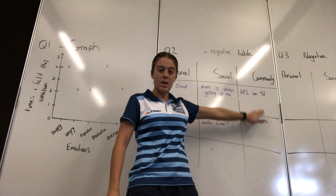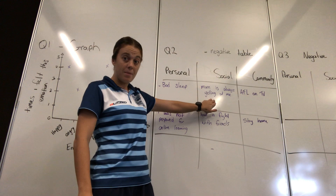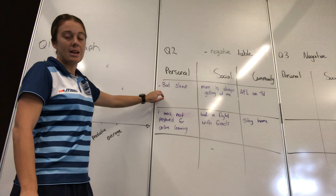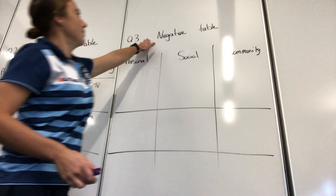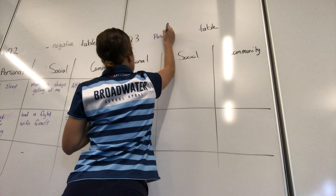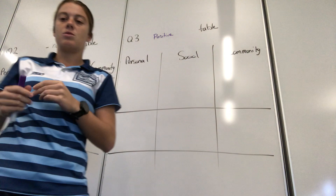Anything that's had a social impact — friends or family — you write in that column. For personal, it's a negative impact that has affected you on a personal level, something you've generally had an influence in. Now, moving across to Table 3 — the positive table. It's the same exact thing as the negative table, except now you're taking your positive influences from your mood tracker and putting them into this table.